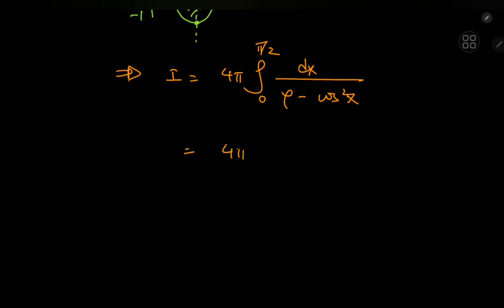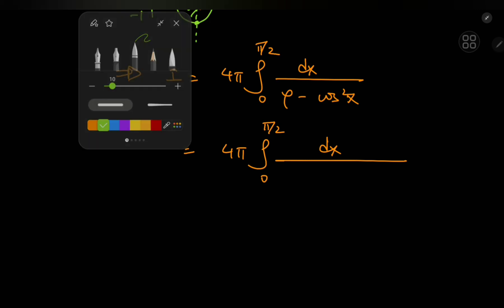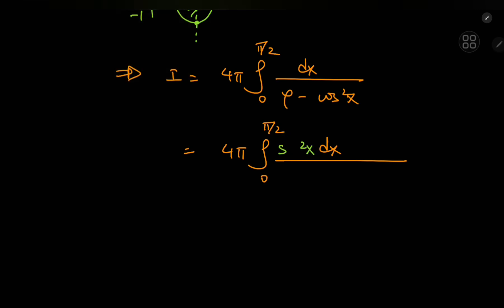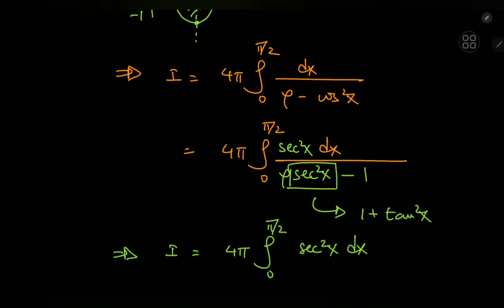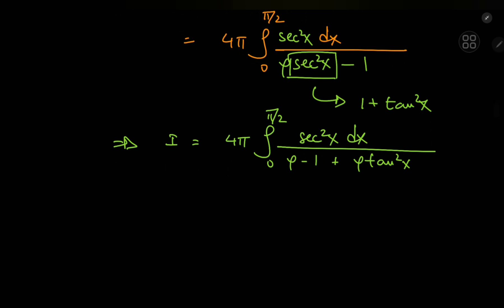Well the first thing I'd like to do is expand using the squared secant of x and you'll see why in a moment. So if I just multiply upstairs and downstairs by the squared secant of x, we have φ times the squared secant of x minus 1 because cosine and secant are just multiplicative inverses. And I'd like to expand this secant term here because we know that this is 1 plus the squared tangent of x. So this implies that i equals 4π times the integral from 0 to π by 2 of the squared secant of x dx divided by φ minus 1 plus φ times the squared tangent of x. And that would be a really good time to like and subscribe.